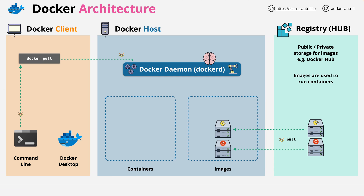Another way you can obtain Docker images is to create them, and this is done using the Docker build command, also via the client. This command takes as an input something known as a Dockerfile. A Dockerfile is a list of directives or statements on how to create a Docker image — and don't worry, I'll be covering this later in the course, and you're even going to create your own. The client gives that Dockerfile to the Docker daemon, and the Docker daemon uses this Dockerfile to create an image.